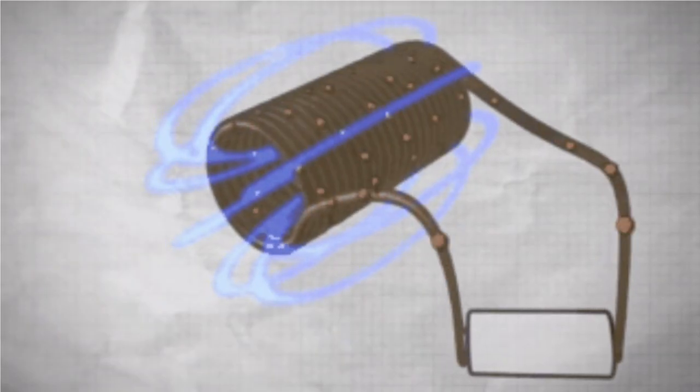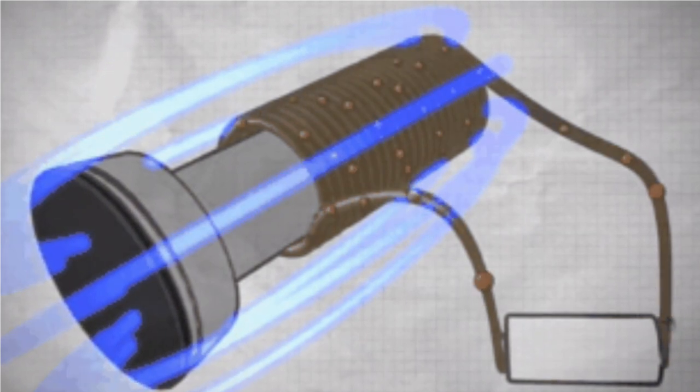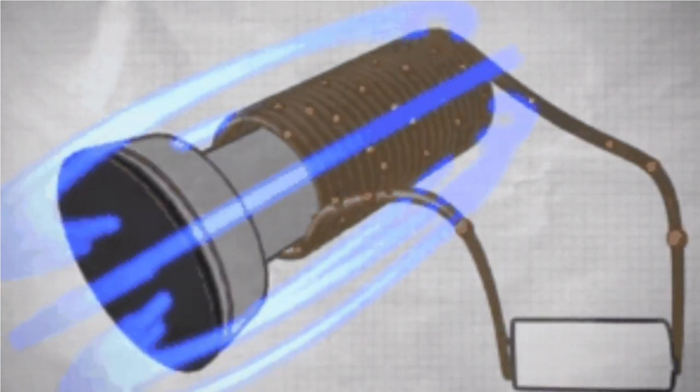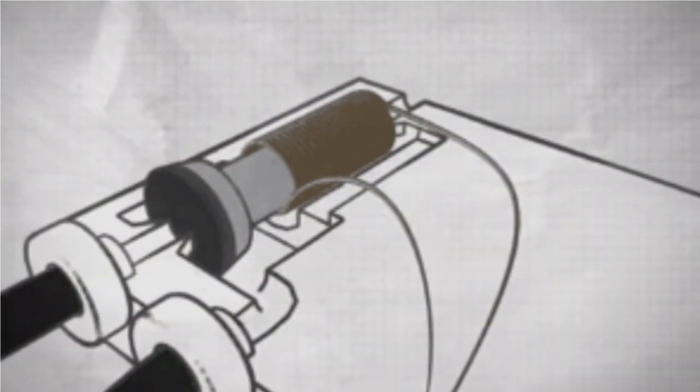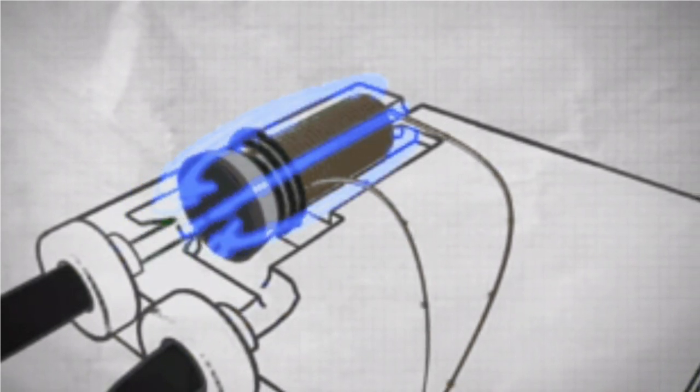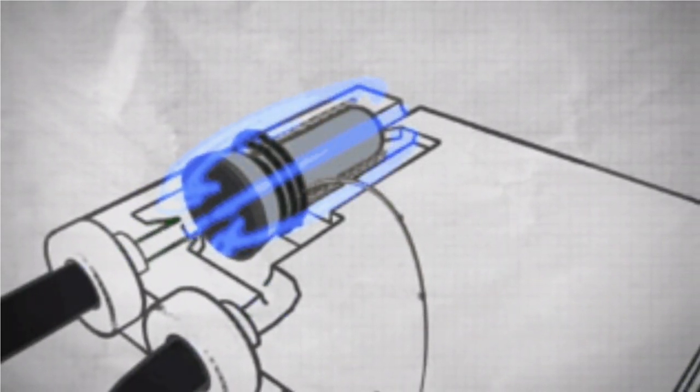First of all, find a 24 volts power source and connect it to the coil. If any noise is heard it means the solenoid valve coil and valve element are normal, which can ensure normal connection.